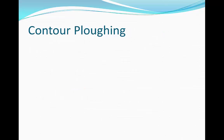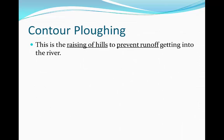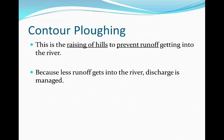One way we can use soft engineering to protect civilization from flooding is by contour plowing. This is the raising of the hills in order to prevent runoff getting into the river. Because less runoff will then get into the river, discharge is managed and decreased, so the risk of flooding is lessened.